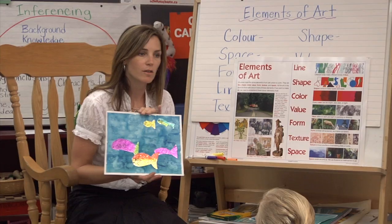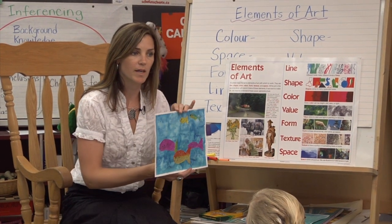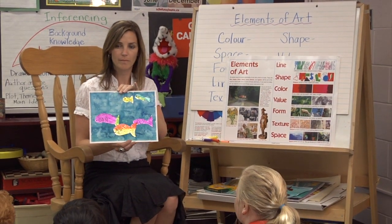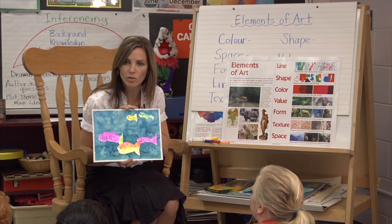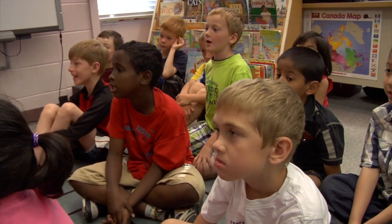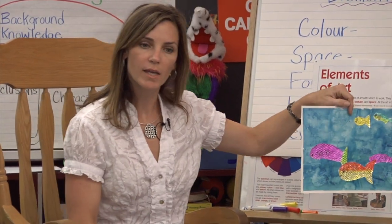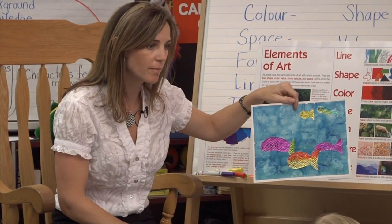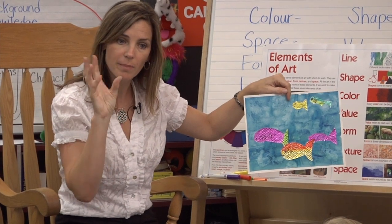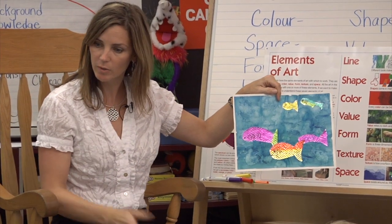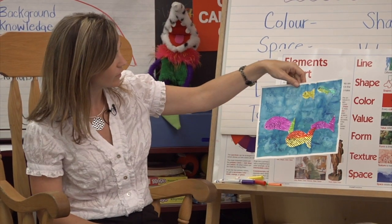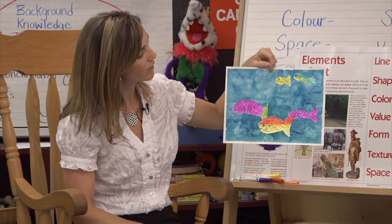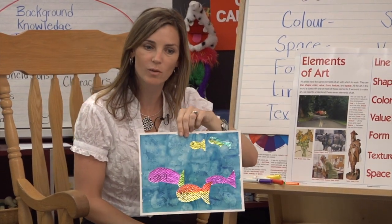We looked at an exotic landscape yesterday, but I thought we might make a different type of exotic work — an underwater scene. Would that sound like fun? Just like Rousseau had that cool green forest with pops of orange to contrast, we're going to do a nice cool water background and then some brightly colored warm fish.